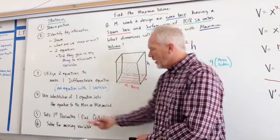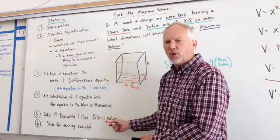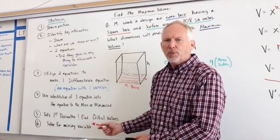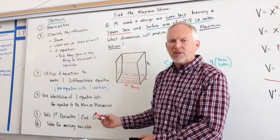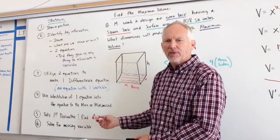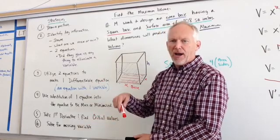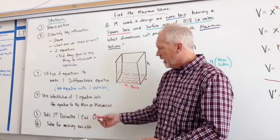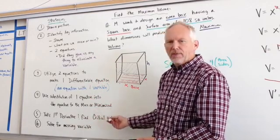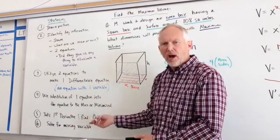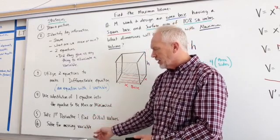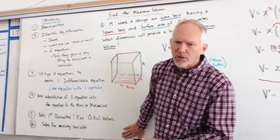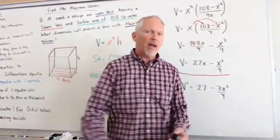Substitute one of the equations into the equation to be maximized or minimized. We did that. We just did that. Take the first derivative and find critical values. Well, if you recall, first derivative and finding critical values means we have to set that derivative, first derivative equal to 0, find the two numbers or the one number, and then once we have that, we test for concavity to make sure we have a max or a min, and then solve for any missing variables that we have left. Let's do that now.